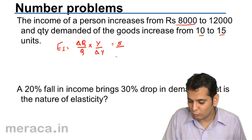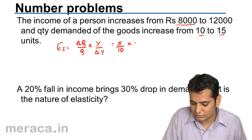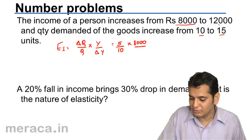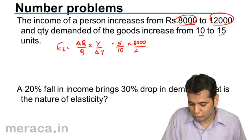Original quantity is 10. Original income is 8,000 and change in income is 12,000 minus 8,000 that is 4,000.